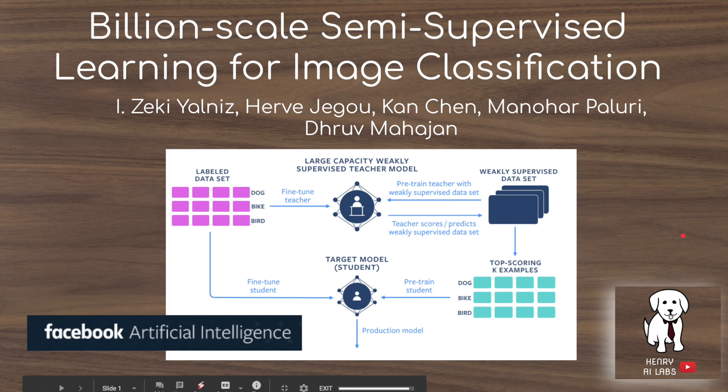Thanks for watching Henry AI Labs. This video will present the semi-weak supervised learning framework presented by research at Facebook's AI Research Lab. This framework is a really interesting extension to their previous work on weak supervision, such as using hashtags on Instagram images as a weakly supervised signal to pre-train ImageNet classification models.